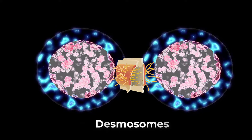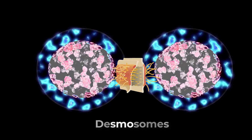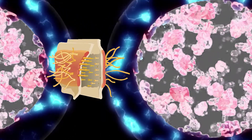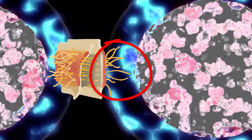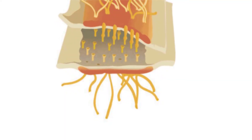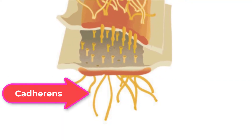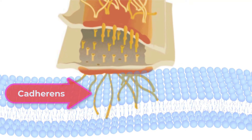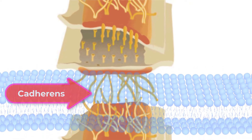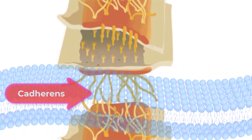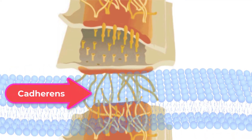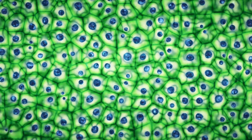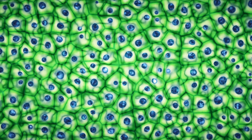Desmosomes occur in patches on the membrane of cells. The patches are structural proteins on the inner surface of the cell's membrane. The adhesion molecule cadherin is embedded in these patches and projects through the cell membrane to link with the cadherin molecule of adjacent cells. These connections are especially important in holding cells together.